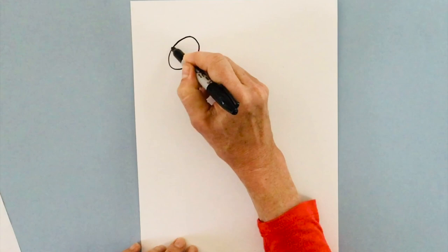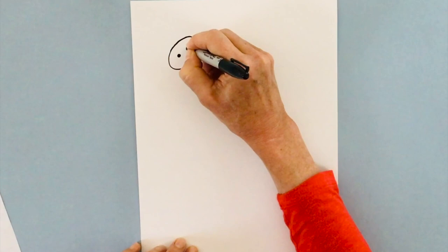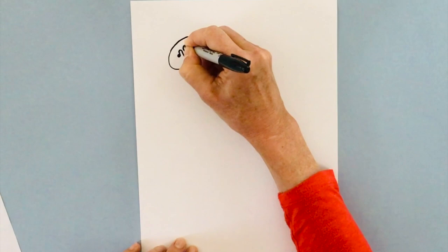And then my eyes, I'm going to start with two circles, and then it kind of goes up and down, just like that. And then I'm going to have my neck and a big triangle.